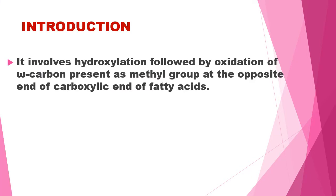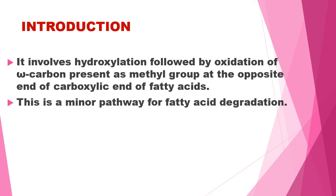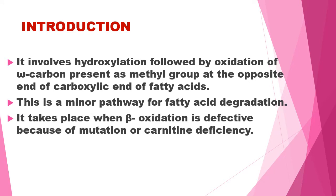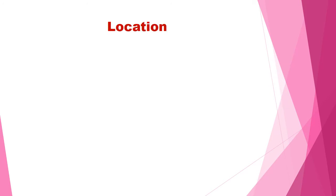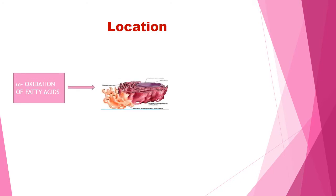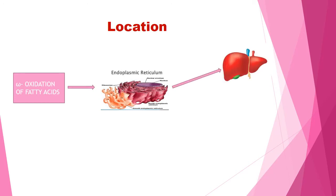Omega oxidation involves hydroxylation followed by oxidation of the omega carbon, present as a methyl group at the opposite end of the carboxylic end of the fatty acid. This is a minor pathway for fatty acid degradation. It takes place when beta oxidation is defective because of mutation or deficiency of carnitine. Omega oxidation of fatty acid occurs in the endoplasmic reticulum of liver and kidney of vertebrates.